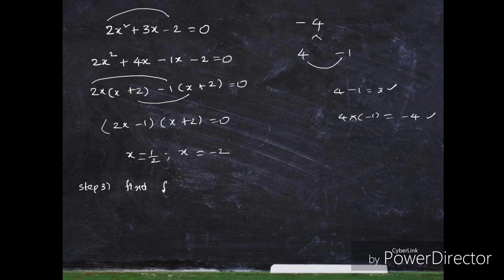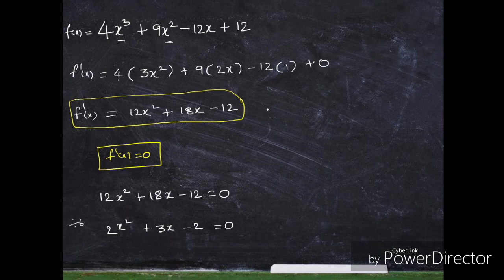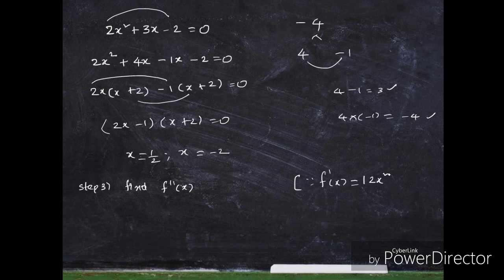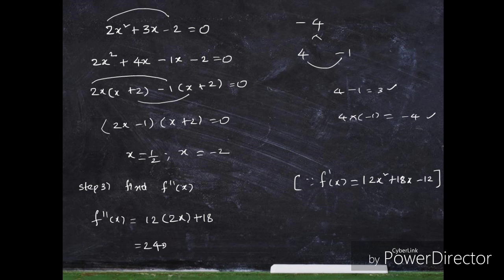Step 3: we find f double dash of x. Starting from f dash of x equals 12x squared plus 18x minus 12, we differentiate again. The derivative of 12x squared is 24x, derivative of 18x is 18, and derivative of minus 12 is 0. So f double dash of x equals 24x plus 18.